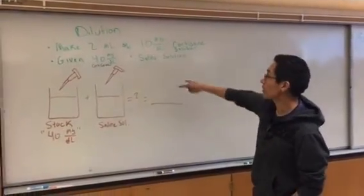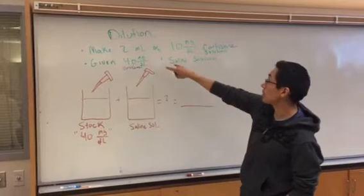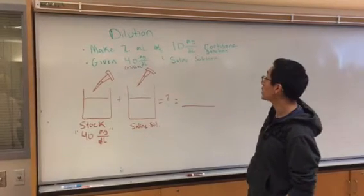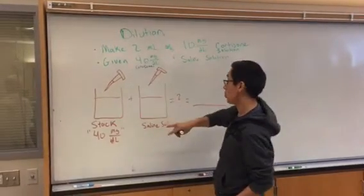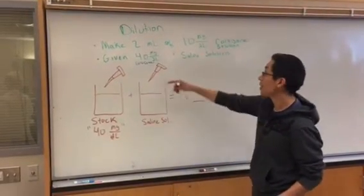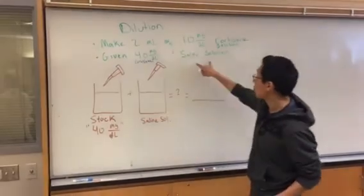Dilution. Let's say, for example, they ask you to make two milliliters of 10 milligrams per deciliter cortisone dilution. What's given to you is a concentration of 40 milligrams per deciliter and also a saline solution.